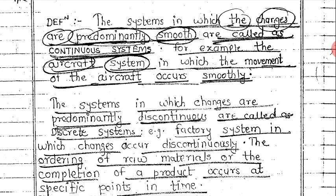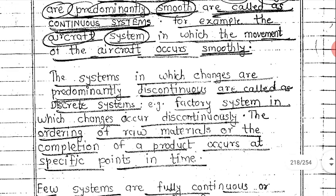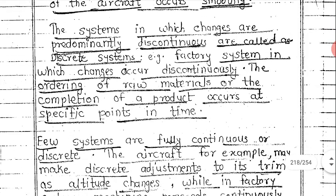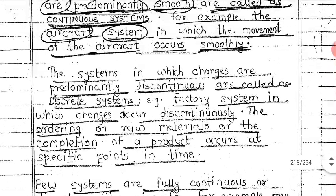A system where the changes are predominantly discontinuous is called a discrete system. In a factory system, for example, the changes occurring inside the system are discontinuous — the ordering of raw materials or the completion of a product occurs at specific points in time.